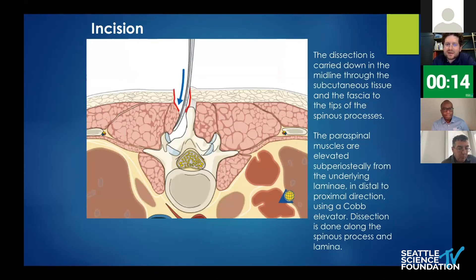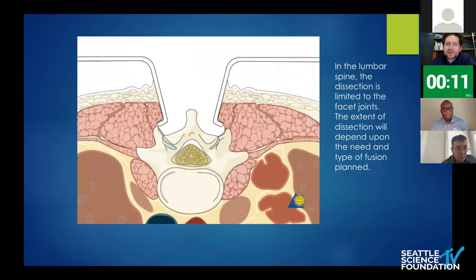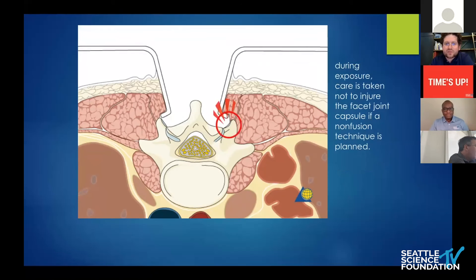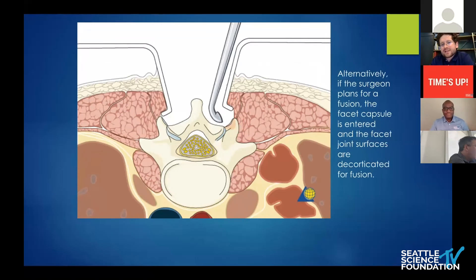For a posterior approach, you dissect the various muscle levels depending on the procedure. Going back to Chapman's 10 commandments — always make sure you do the correct side. One change I've made from Chapman's commandments: instead of specifying 'right side,' during my timeout I simply say 'the correct side,' to reduce confusion. Depending on whether you're doing a laminectomy or fusion, you may or may not dissect off the facet capsule, based on your procedural goals.